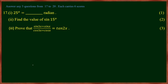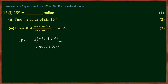Third question: prove that (sin 3x + sin x) divided by (cos 3x + cos x) equals tan x. Let's look at the left-hand side: sin 3x plus sin x divided by cos 3x plus cos x. I'll show you how to do it.